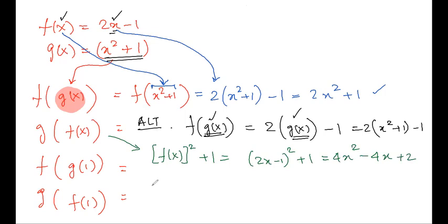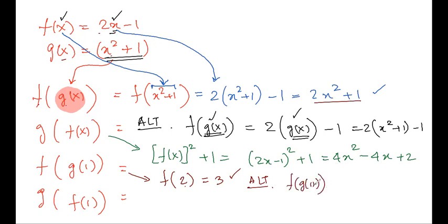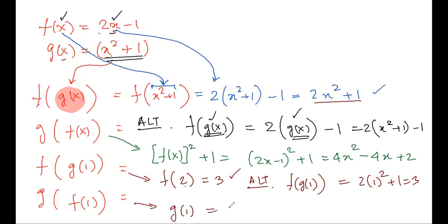For f(g(1)): first find g(1) equals 1 plus 1 equals 2, then f(2) equals 2 times 2 minus 1 equals 3. Alternatively, using f(g(x)) equals 2x squared plus 1, plug in x equals 1 to get 3. For g(f(1)): f(1) equals 1, then g(1) equals 2.